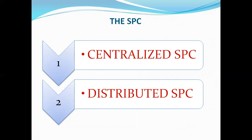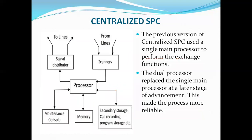Switching program control can be of two types: centralized switching program control and distributed switching program control. Centralized means having a dual processor system having some memories. We have scanner units and signal distributors. Consider it as an exchange — the exchange is having some processor, that is a computerized exchange.